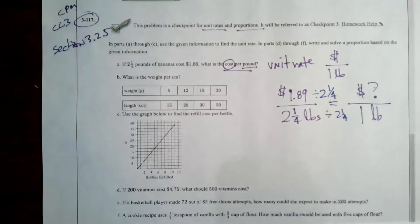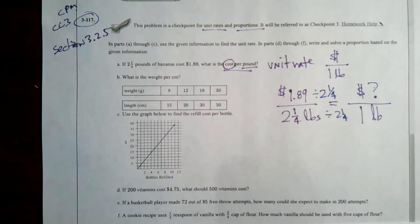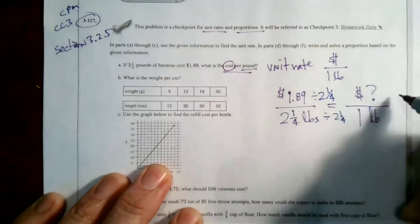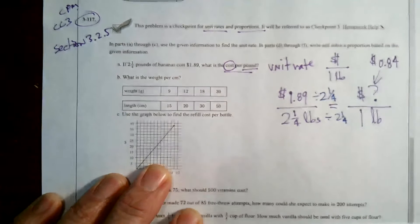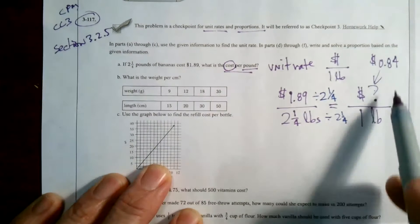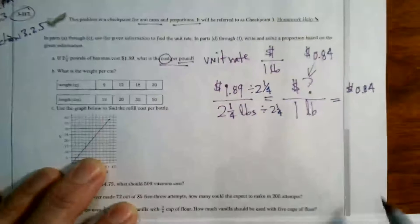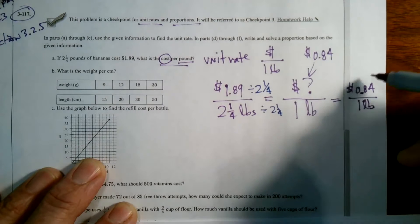We can do that via a calculator. The process is what I want to make sure we know. So $1.89 divided by two and one fourth gives me 84 cents exactly — 0.84, which is 84 cents. So for part A, the cost per pound is 84 cents for every one pound.